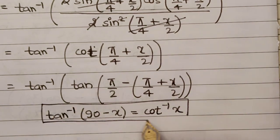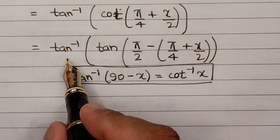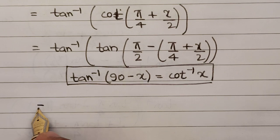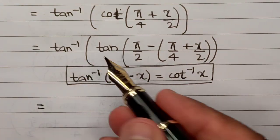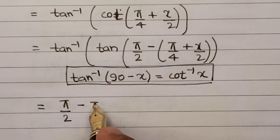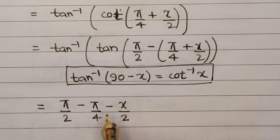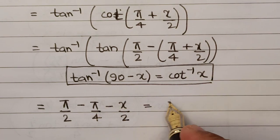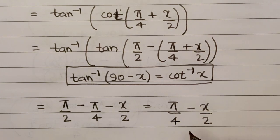Now this tan and this tan will get balanced out or they'll cancel each other. So all we are left with is pi by 2 minus pi by 4 minus x upon 2, and on solving this we get the final value as pi by 4 minus x upon 2. So this, my friend, here is the final answer for this problem.